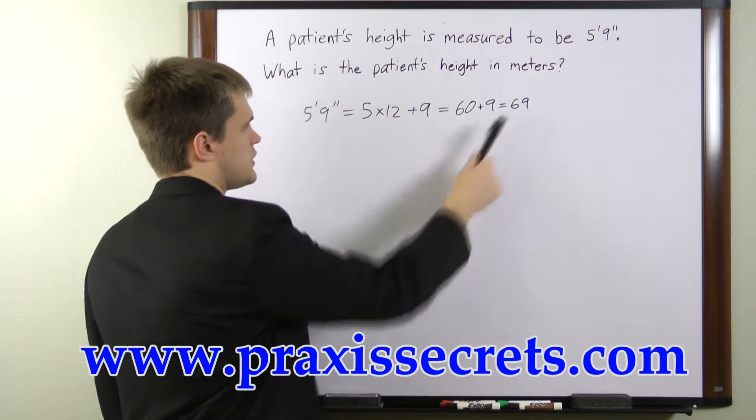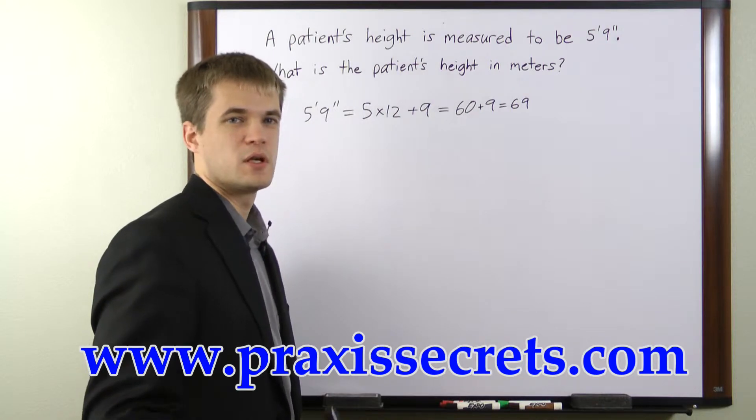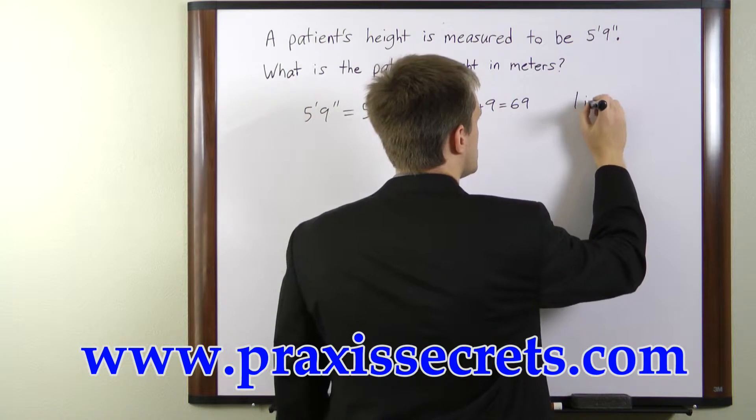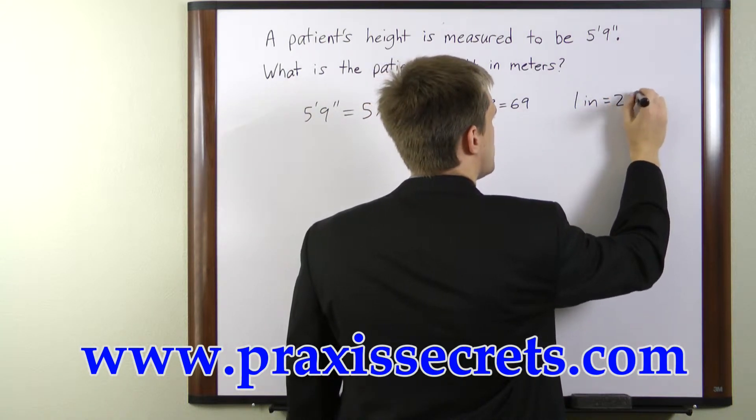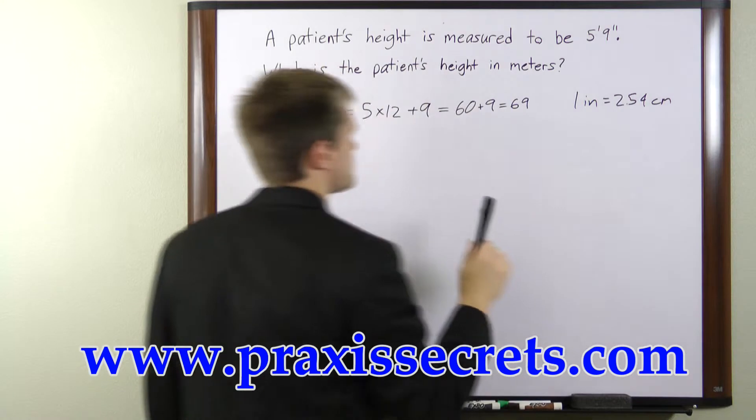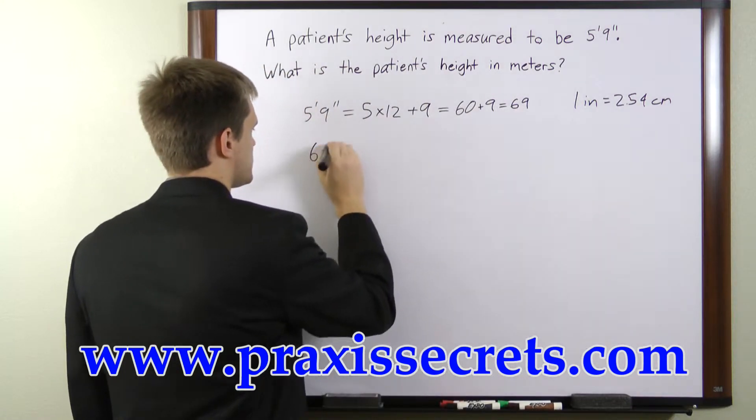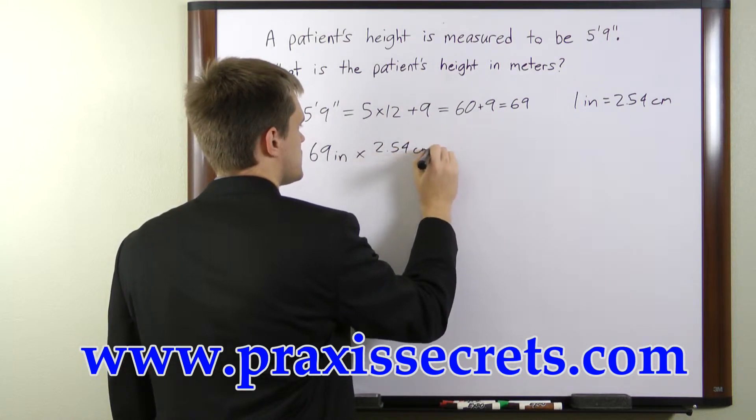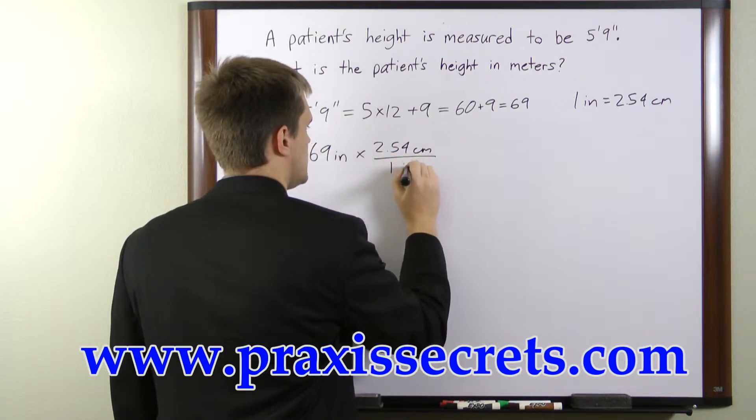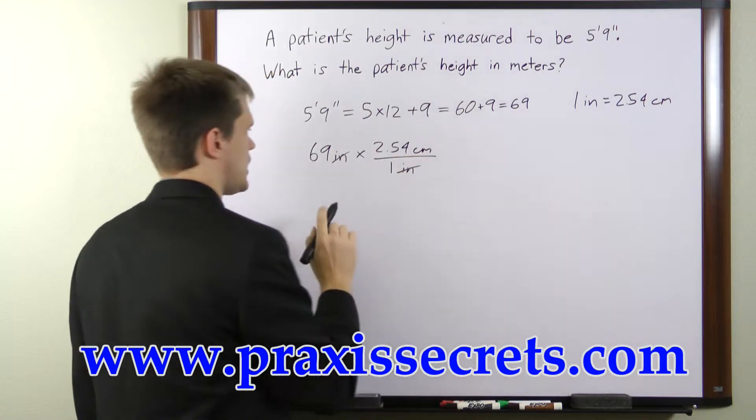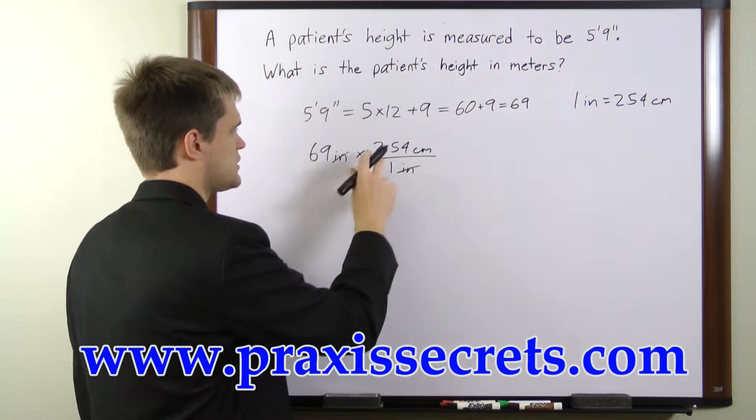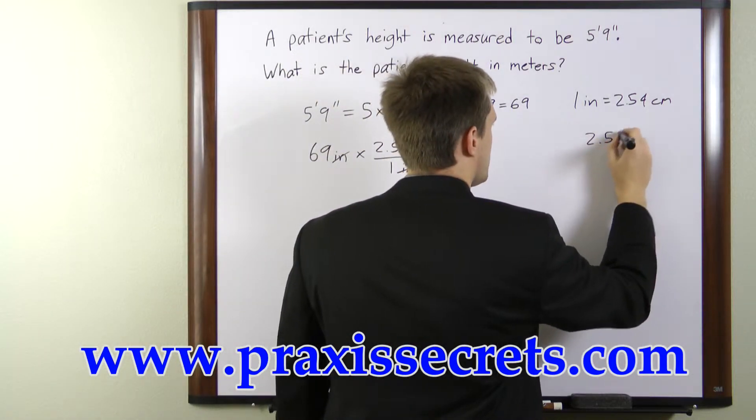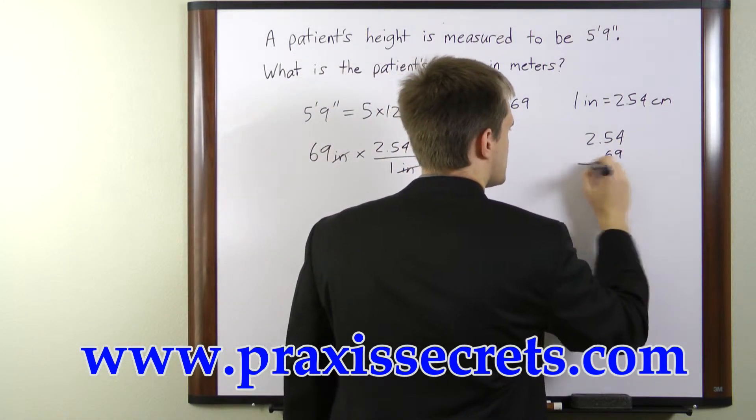Now we then need to convert the inches into centimeters and so to do that we need our unit conversion. 1 inch is equal to 2.54 centimeters so we'll multiply our 69 inches times 2.54 centimeters per 1 inch. The inches will cancel and we multiply 69 times 2.54 centimeters.